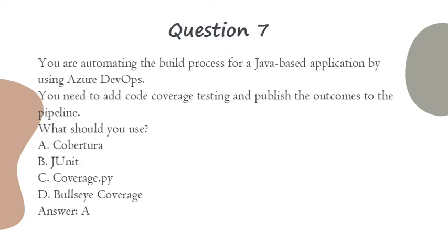Question 7. You are automating the build process for a Java-based application by using Azure DevOps. You need to add code coverage testing and publish the outcomes to the pipeline. What should you use? A. Cobertura. B. JUnit. C. Coverage.py. D. Bullseye Coverage. Answer: A.